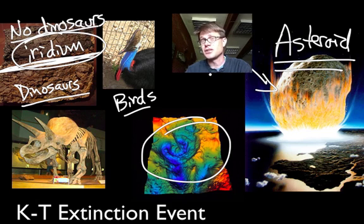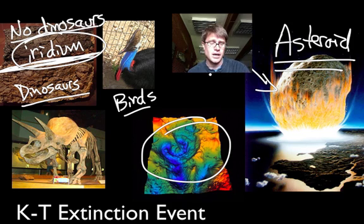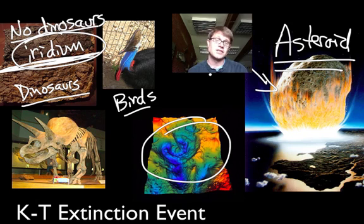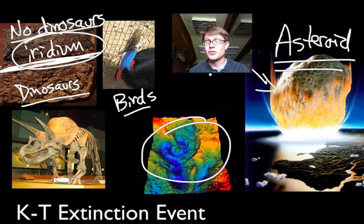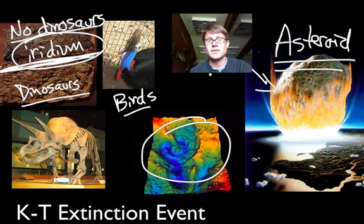To summarize: speciation creates new species, extinction removes them. Their rates vary dramatically over time, and both are driven largely by changes in the environment.